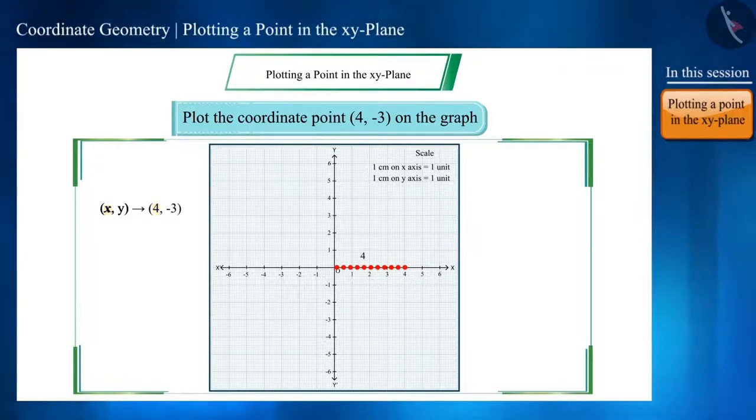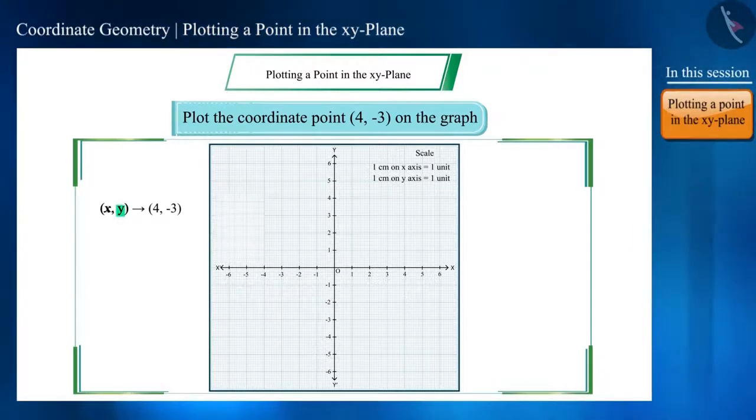But in which direction, upwards or downwards? It depends on the Y coordinate. Our Y coordinate is minus 3 which is downwards, that is we will take this line down towards minus 3 and mark the point there. And now it is representing the point 4 minus 3.